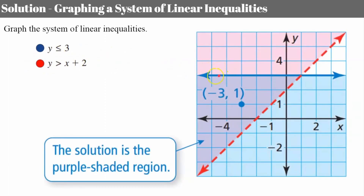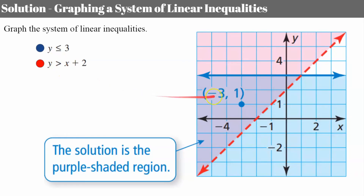Here we have a horizontal line passing through the y-axis at 3. It's a solid line because it's equal to, and we've shaded below because it's less than. Then the second inequality is graphed in red — a dashed line because it's greater than, with a y-intercept of 2 and slope of 1, shaded above the line.